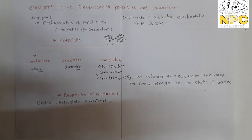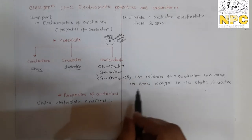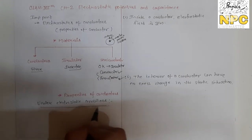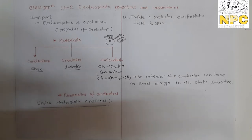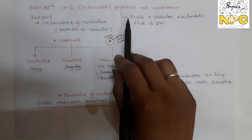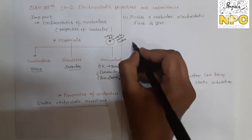Now we talk about the properties of conductors. All these properties are based on particular points and hold under electrostatic conditions — meaning when the charges are in a static position, all these properties apply.